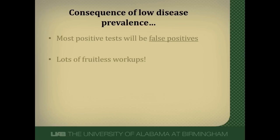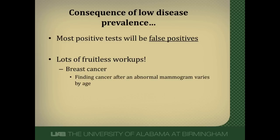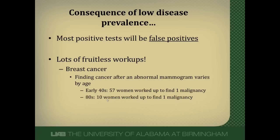The consequences of low disease prevalence mean that most positive tests you see are going to be false positives, and we'll be doing lots of fruitless workups — confirmatory workups on many people where we find little. For example, data on breast cancer shows that the chance of finding cancer after an abnormal mammogram varies by age. In younger women in their early 40s, we have to work up 57 women to find one malignancy, but as they get older, we work up far fewer. That low prevalence has a real impact, and most positive tests will be false positives.